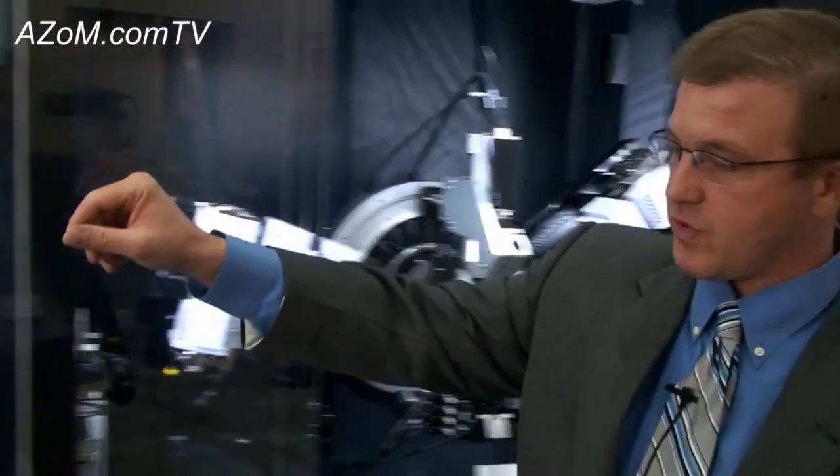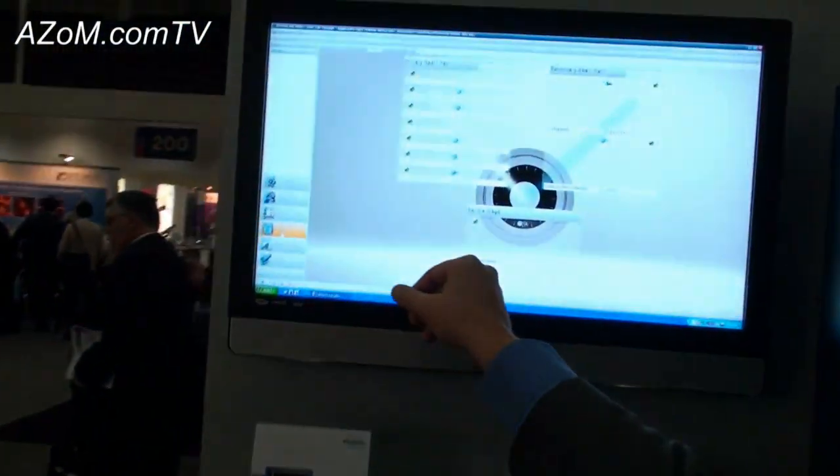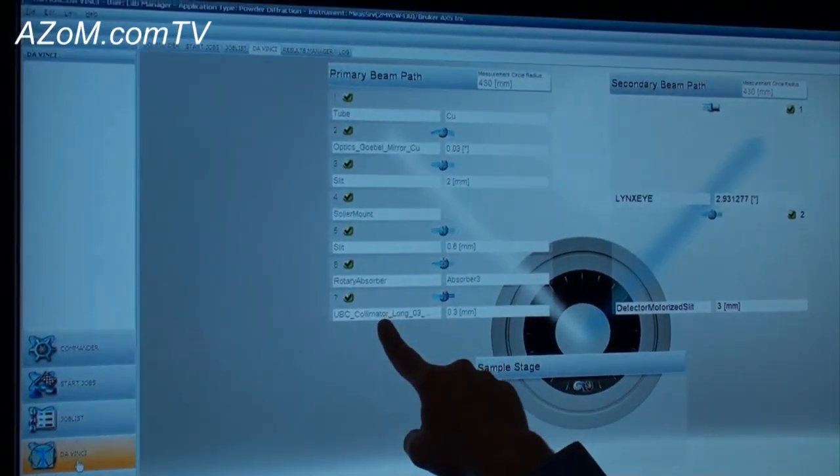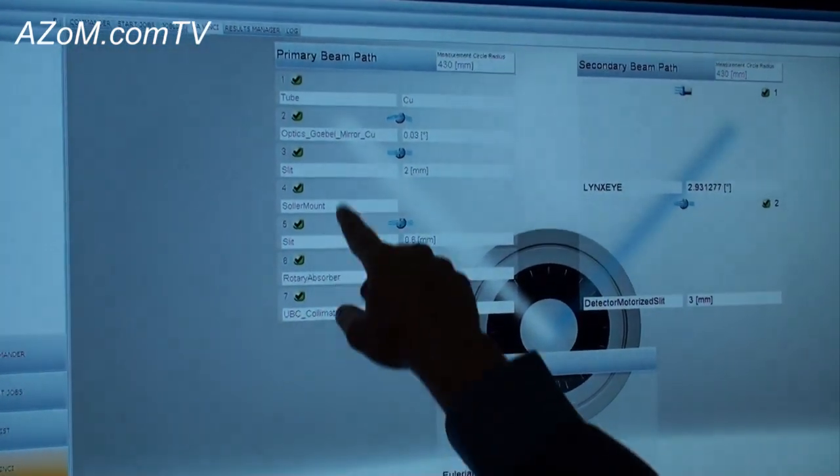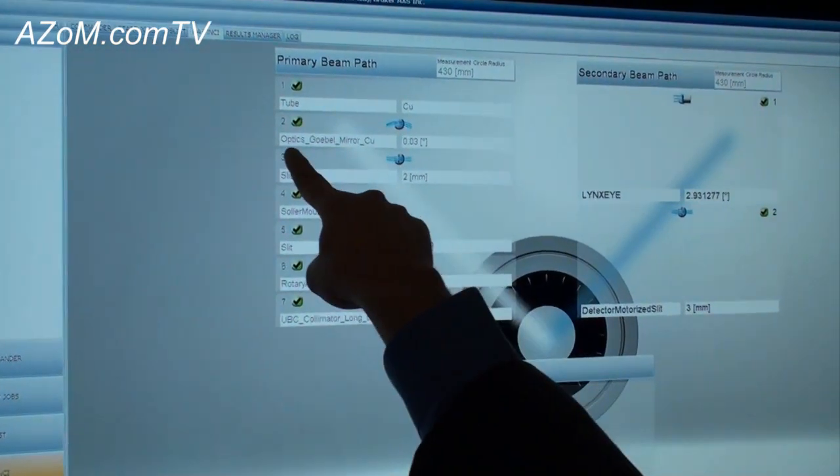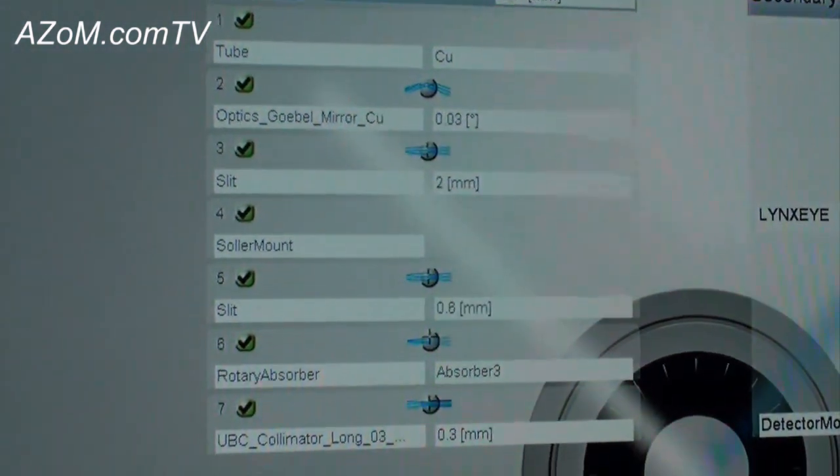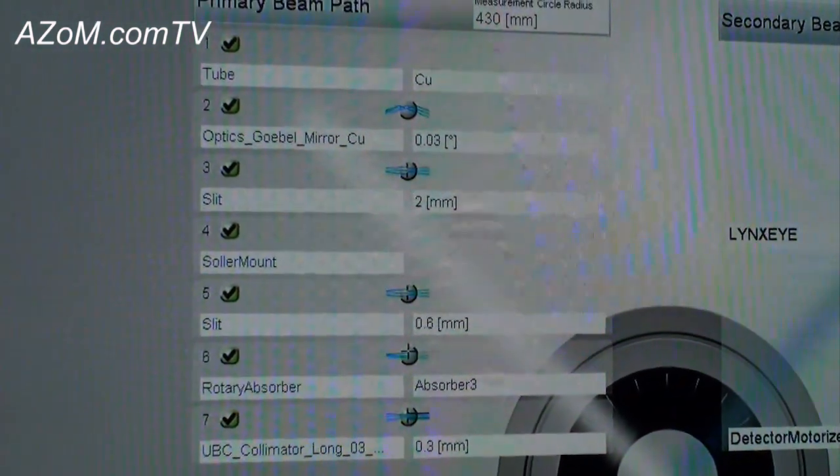If we take a step over here and look at the screen, you can see all of the optics that are mounted to the system at any given time. So if we look, for example, at position number two, the optics, the Göbel mirror for copper radiation. If you stay right there for me for a second...